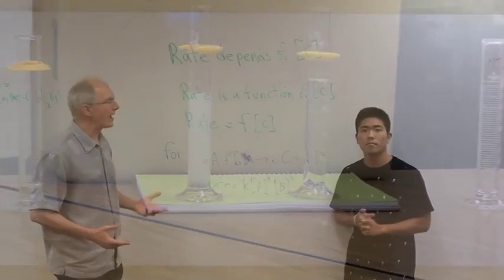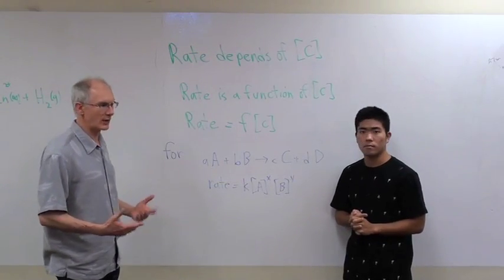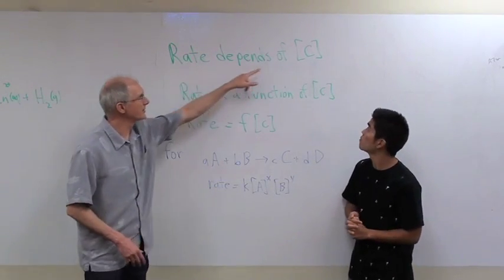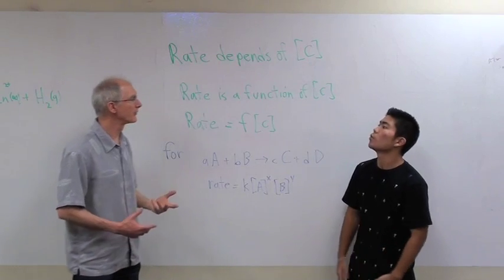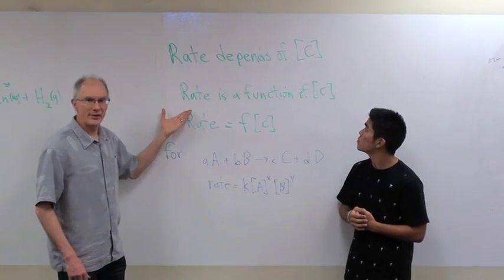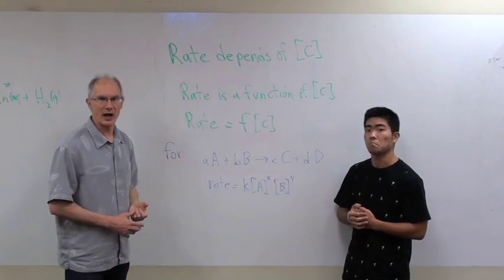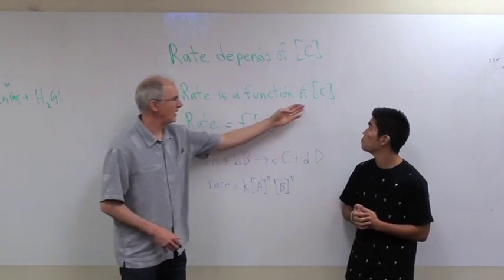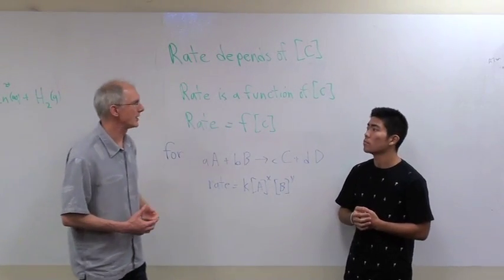So what we saw was that for that chemical reaction, in general for chemical reactions, the rate depends on the concentration of the reagents. We could also say that the rate is a function of the concentration. When you change concentration, you change the rate. That's what that means.